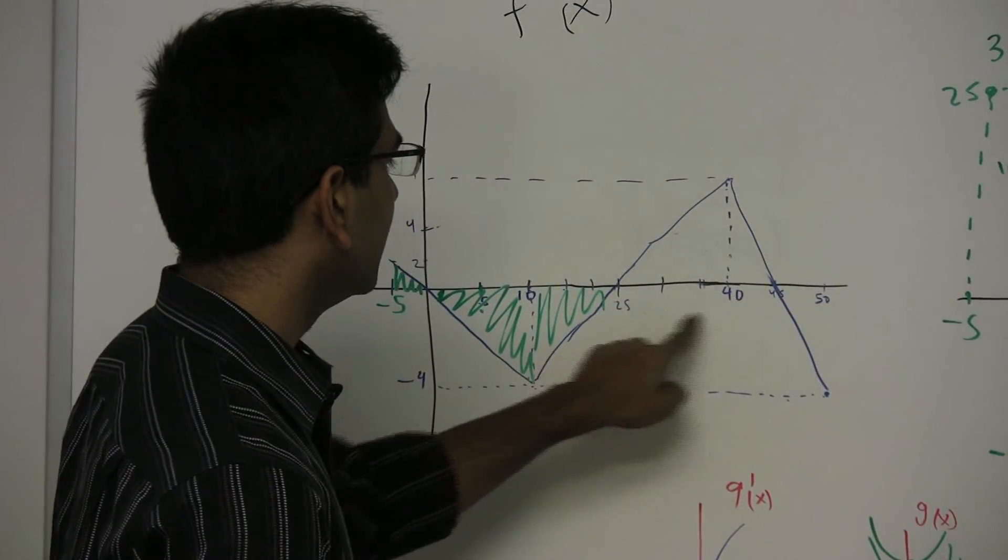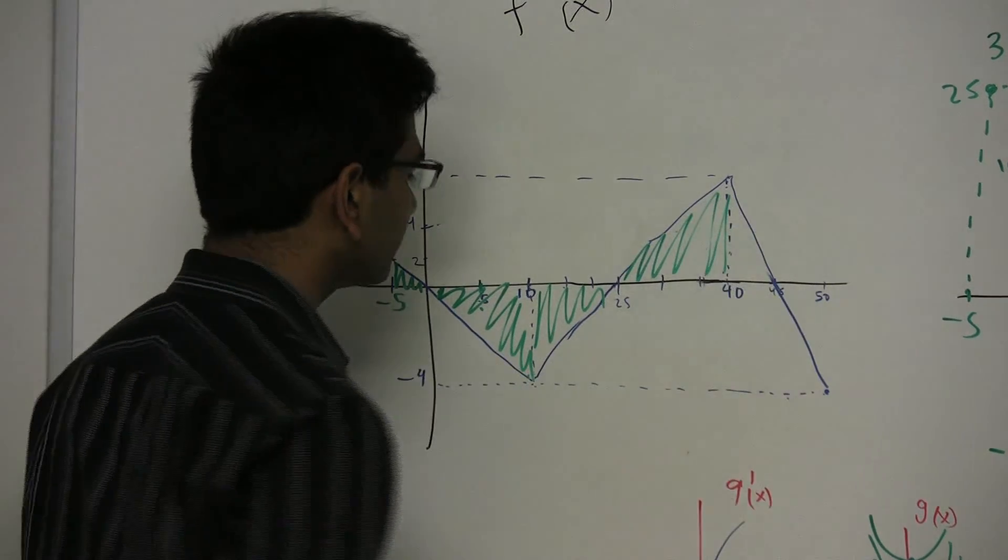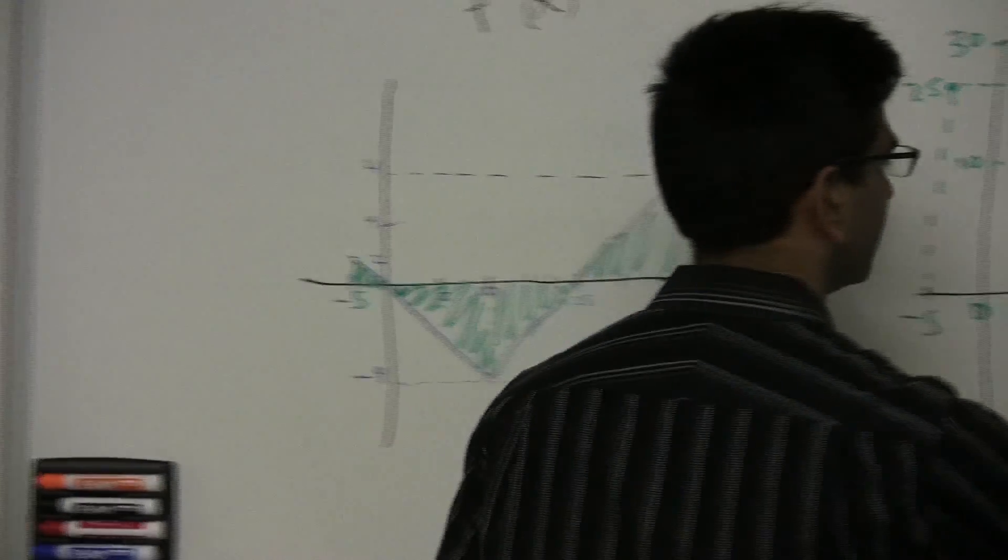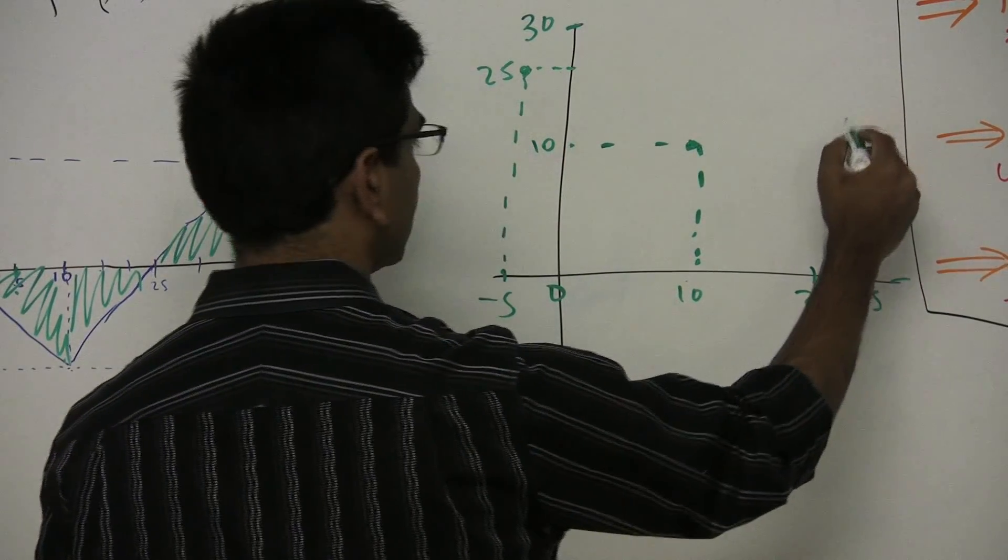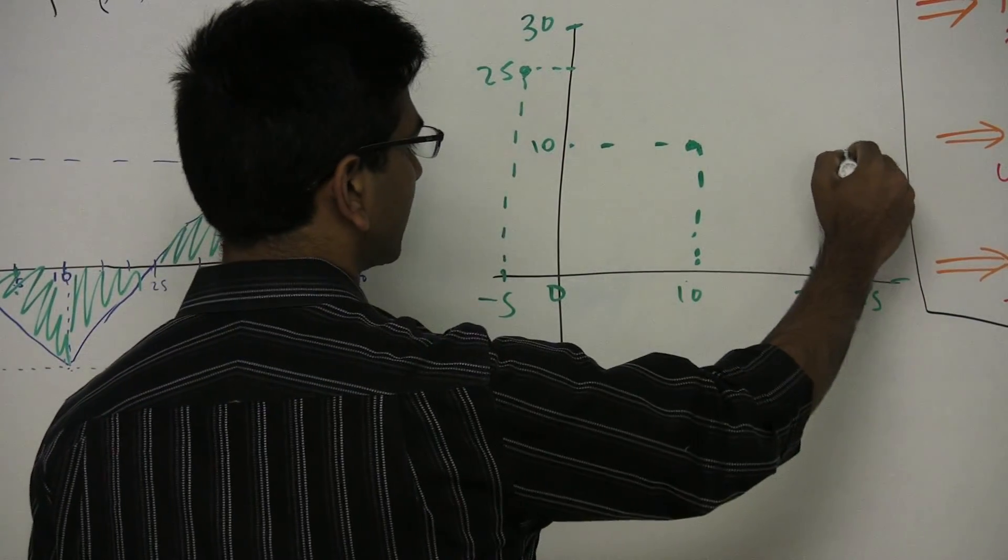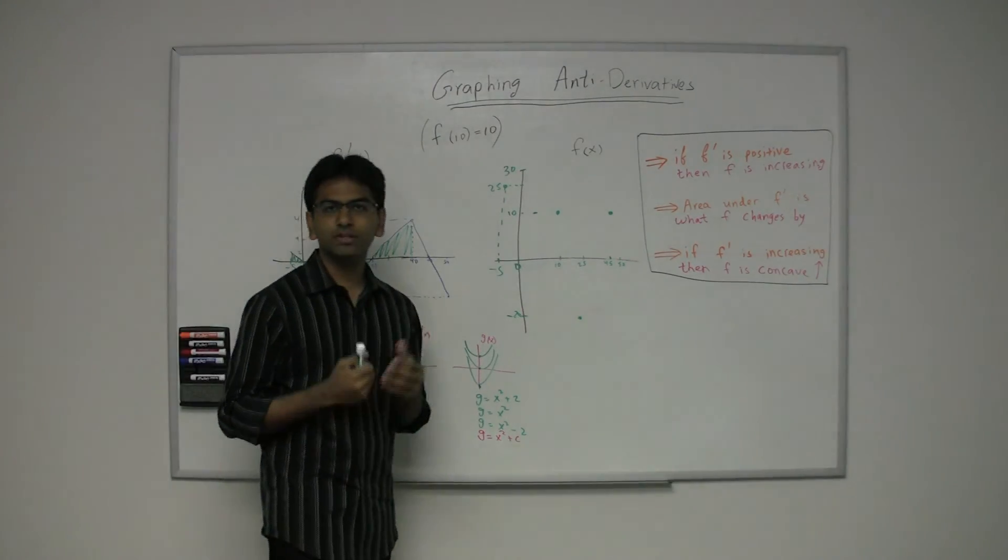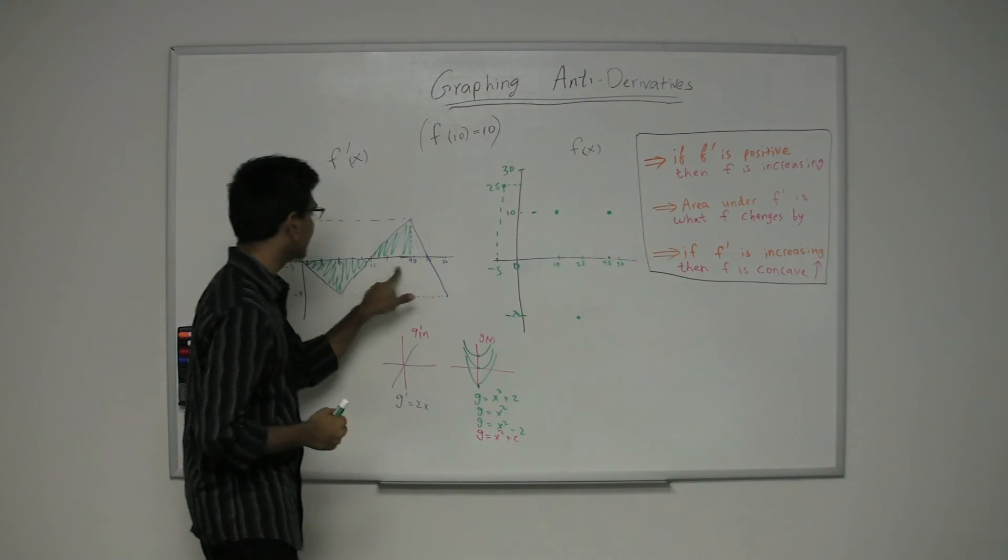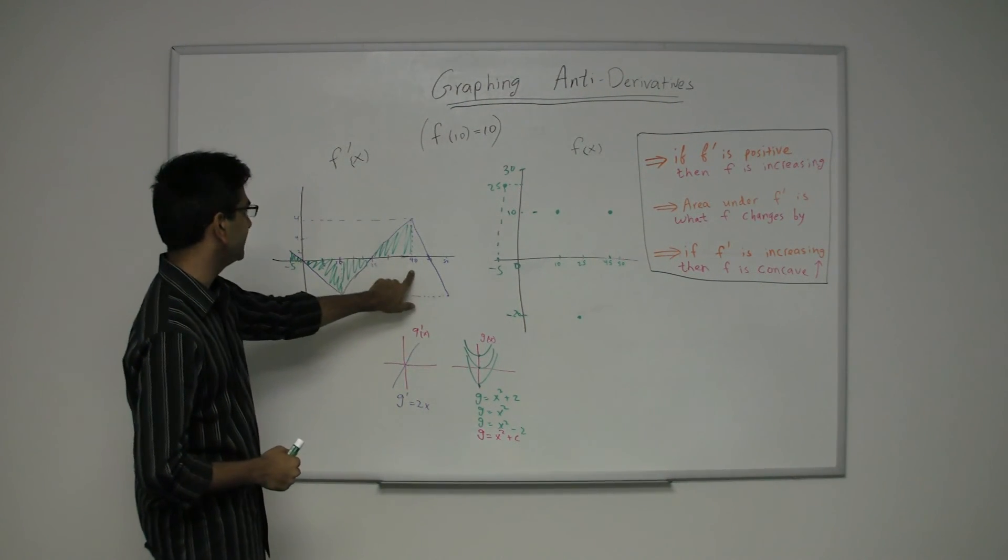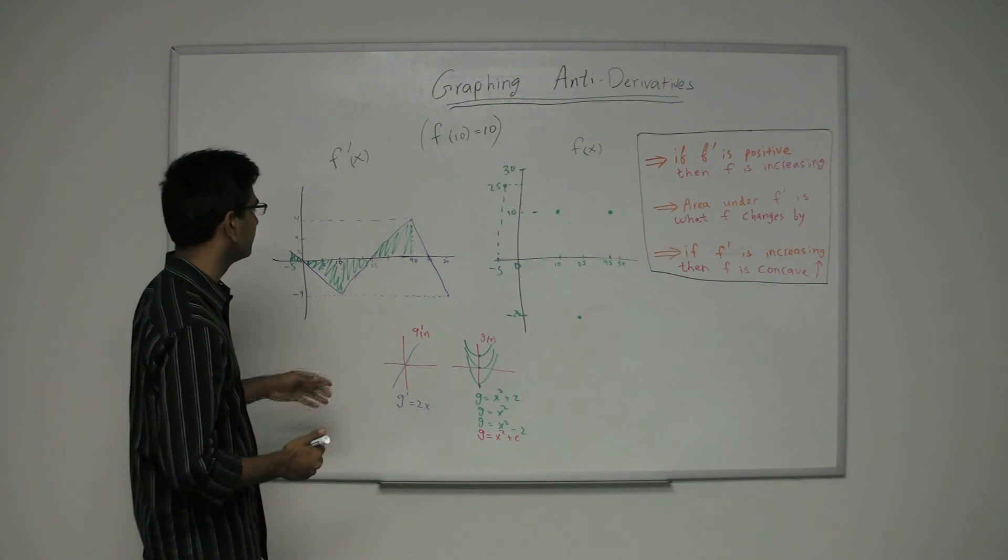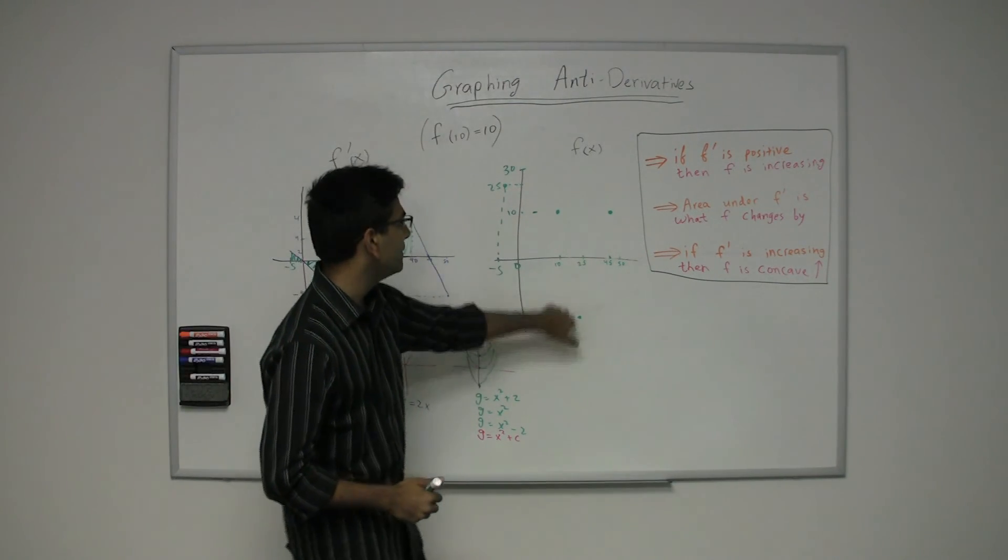And then, of course, the area over here between 25 and 40 is also 30. So between 25 and 45, the graph will actually also increase by 30. So it will actually equal this, f of 10. So now, looking at the graph between 25 and 40, we know that it goes up also by 30 units, because we have 15 times 4, 60, divided by 2. So it will go up by 30 units from negative 20, back up to 10.